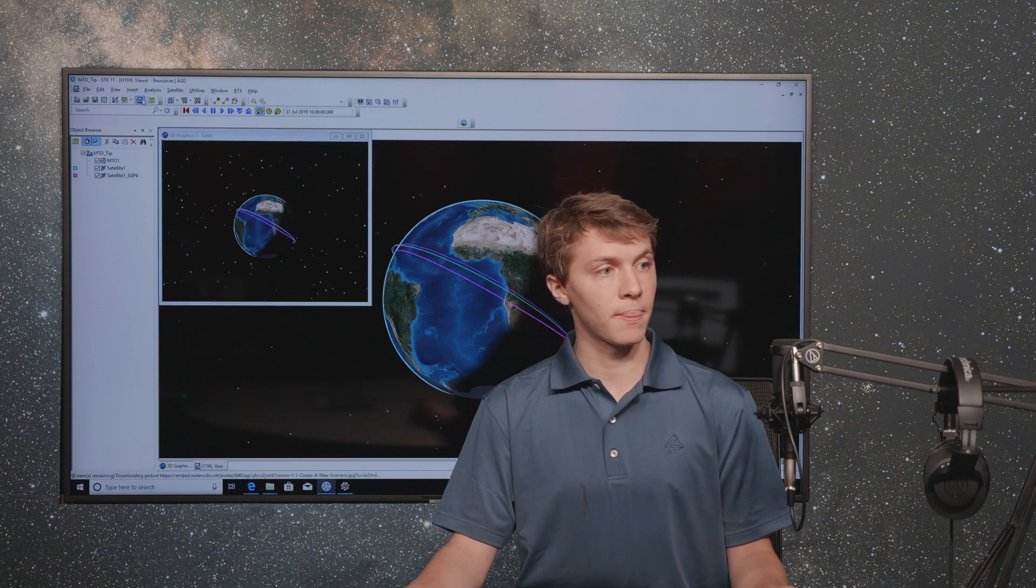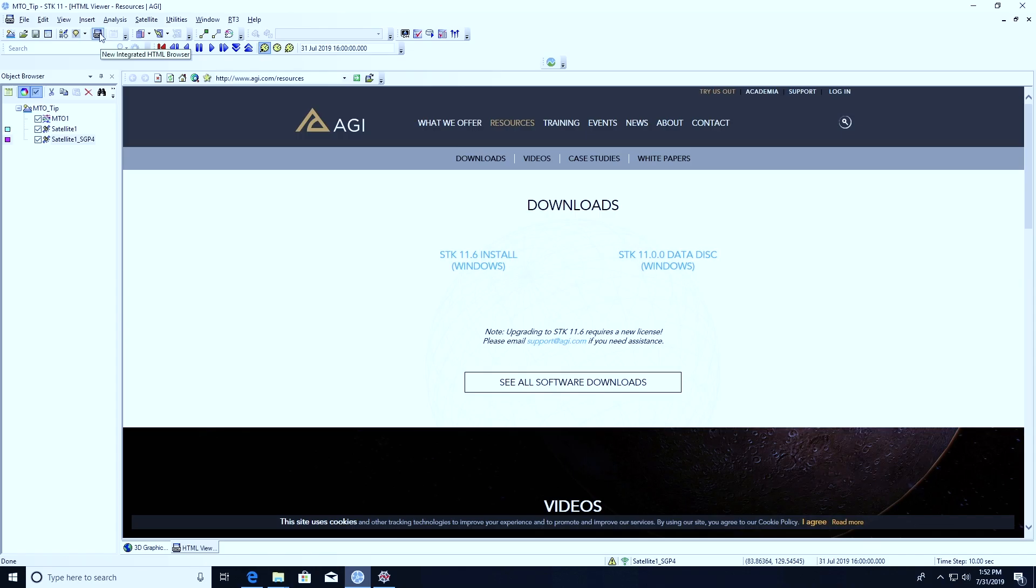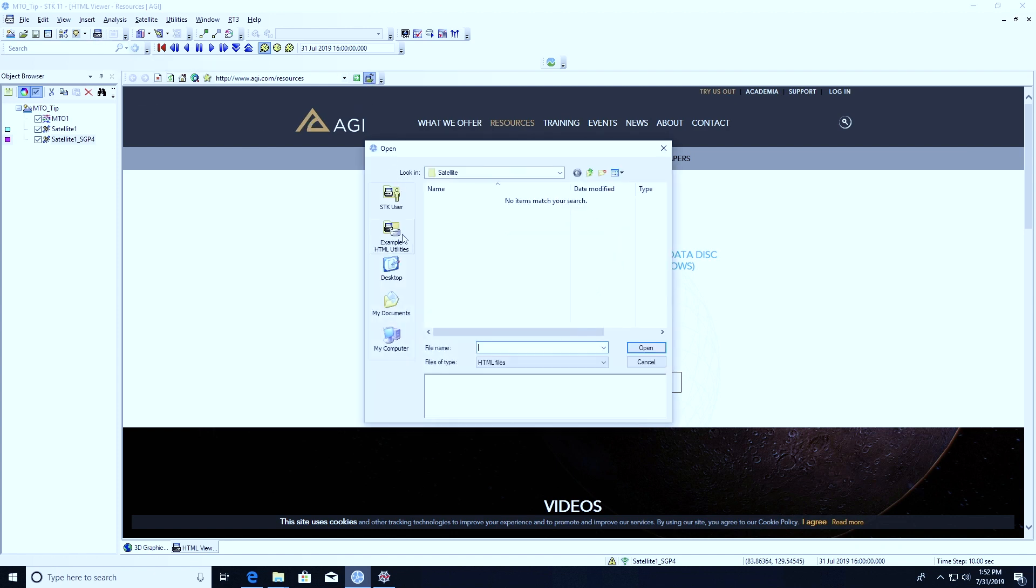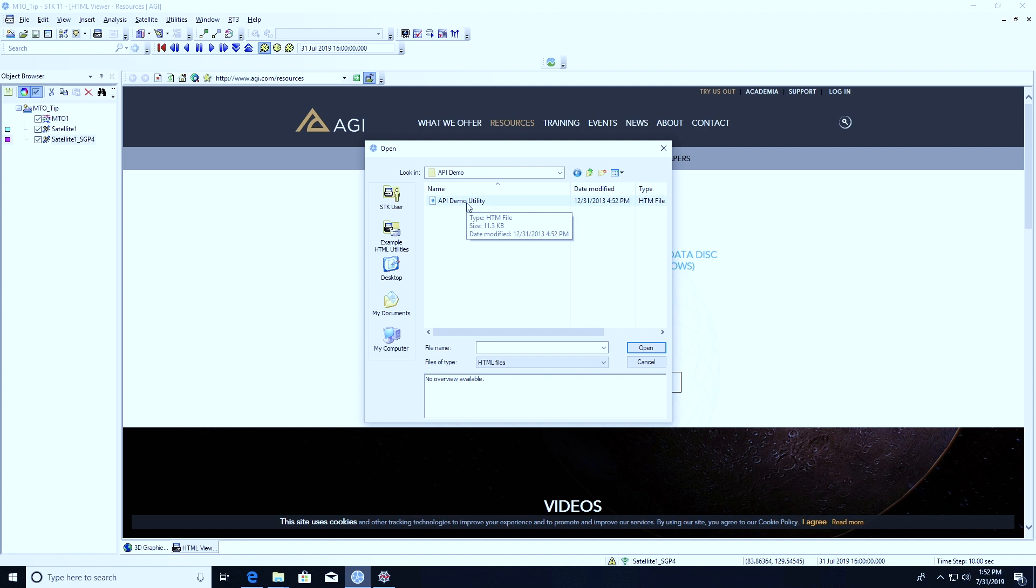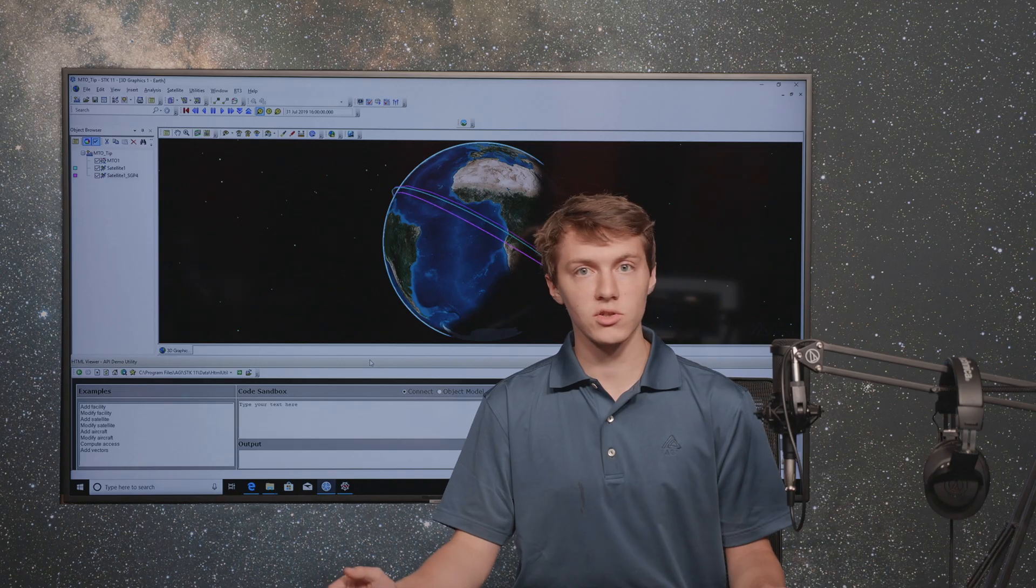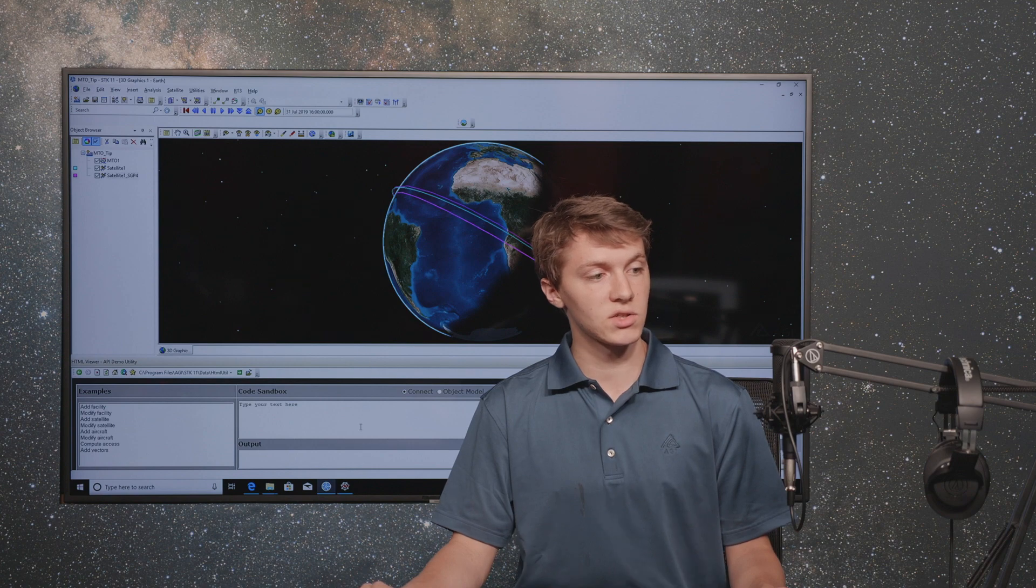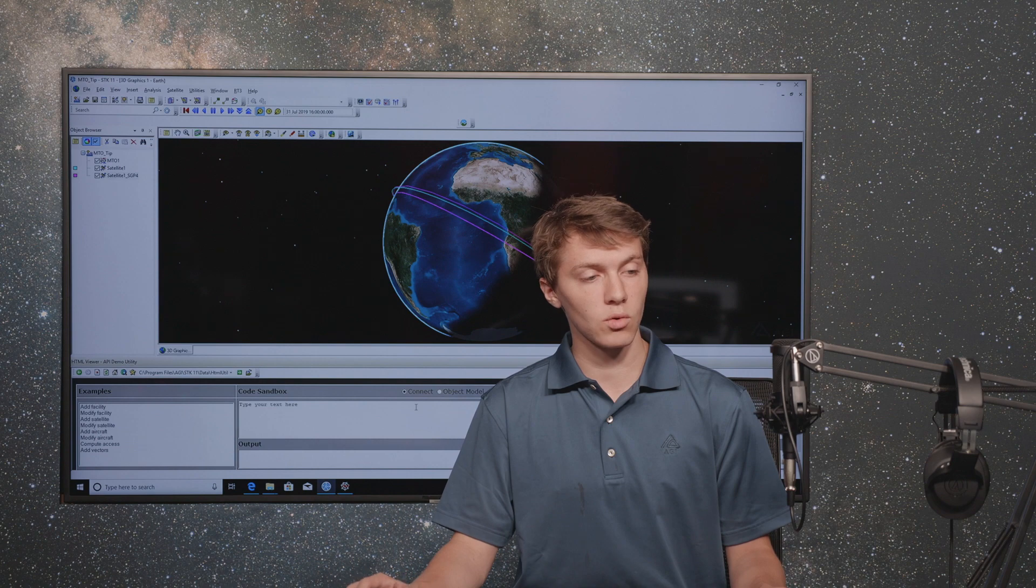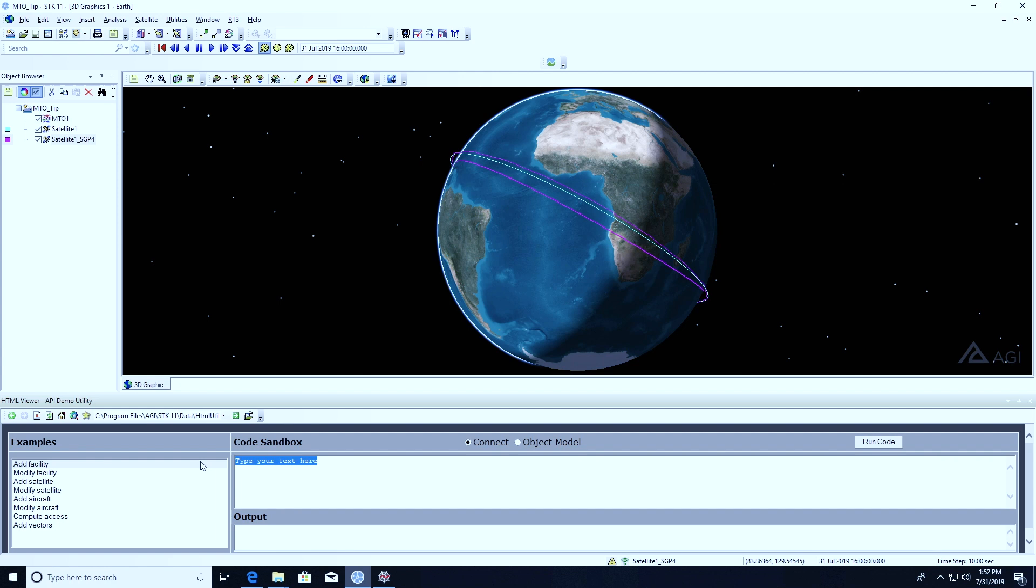You're going to open the integrated HTML browser by clicking this HTML button up here. I'm going to click Browse, go to Example HTML Utilities, SDK Automation, API Demo, and select the API Demo Utility. Now connect commands are a programming interface that exists to make automation in SDK easier. With this interface, you can send a single or a series of connect commands directly to SDK, which is pretty convenient for our purposes.